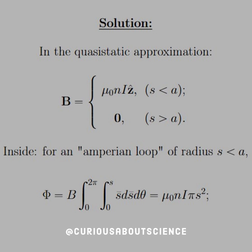We know that for a solenoid the field is mu-naught times n times I in the z-direction, running inside, and the field is zero outside — again, this is only the quasi-static approximation because the field is varying. For an Amperian loop of radius less than A inside the solenoid, phi equals the integral of B dot dA, which is the integral from zero to two pi, zero to S of B times S-bar dS-bar dθ. Plugging in B equals mu-naught n I, we just get the surface area of a circle: pi S squared.